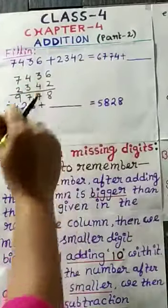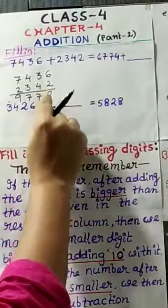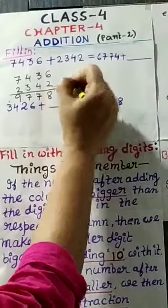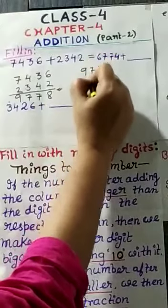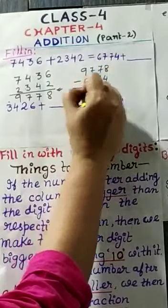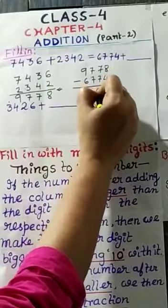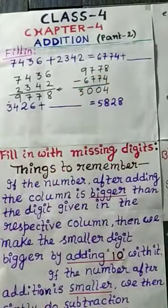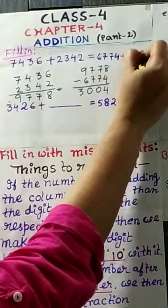Now, what we will have to do? We will have to subtract this number from the sum of this number. So, this number 9,778 minus 6,774. 8 minus 4, 4. 7, 7, 0. Again, 0. 9 minus 6, 3. So, the answer comes as 3004.